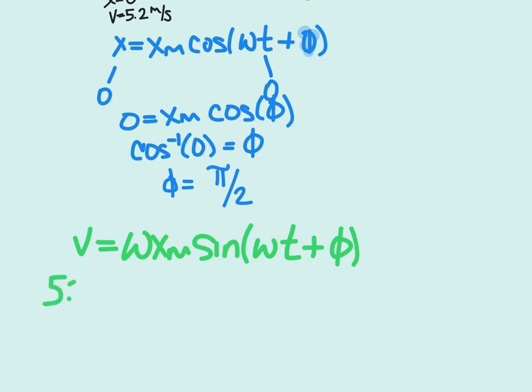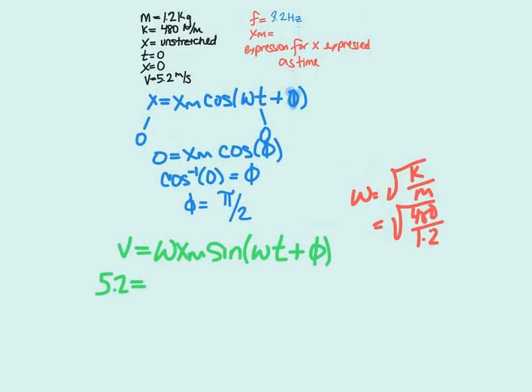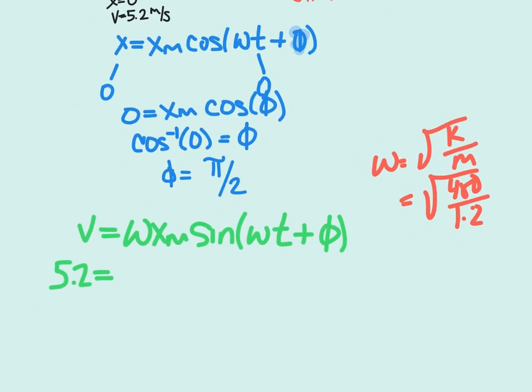Velocity we have is 5.2 meters per second. For omega, we can solve where omega equals the square root of k over m, which equals the square root of 480 divided by 1.2. That means omega equals 20 radians per second.